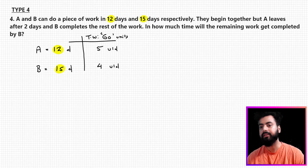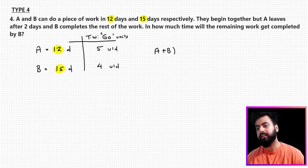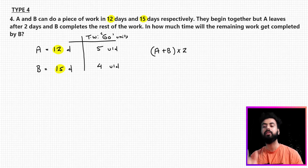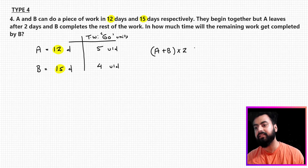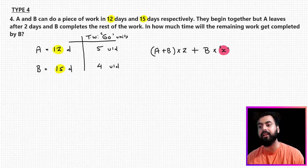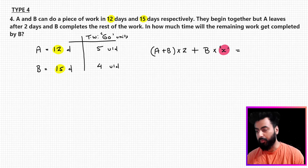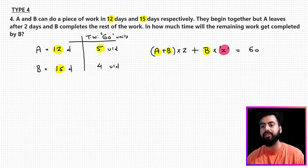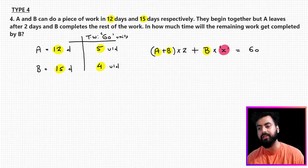Now let's read the condition: they begin work together but A left after two days. Since they started together, they must have worked together for the first two days. After that, A is out of the picture and only B will do the remaining work. Let's assume B takes x number of days to complete the remaining work — that's what we need to calculate. A and B together complete the total 60 units of work, where A and B represent their efficiency values.